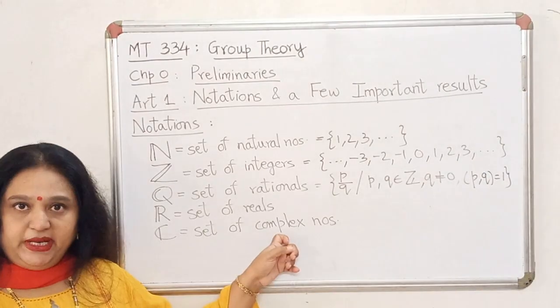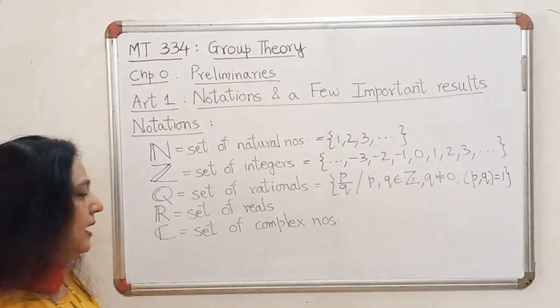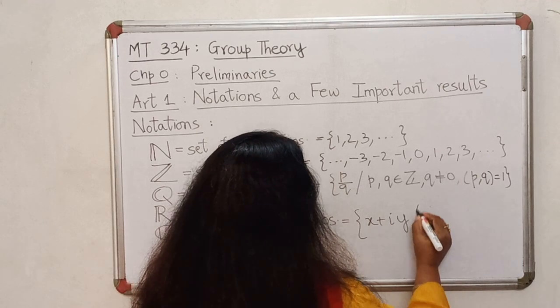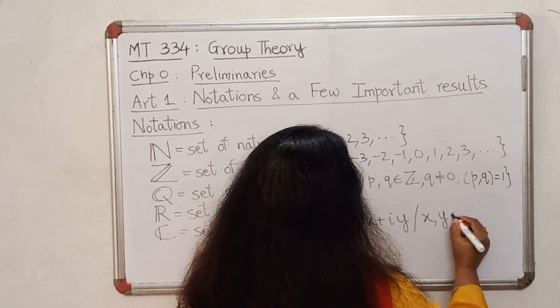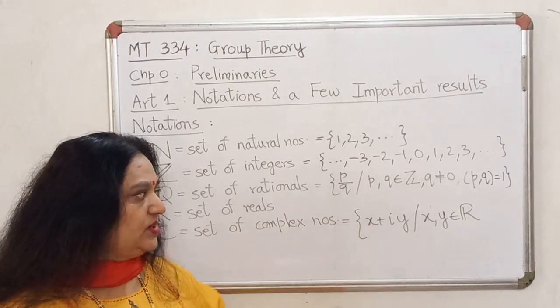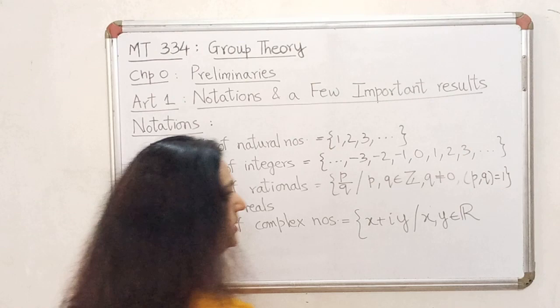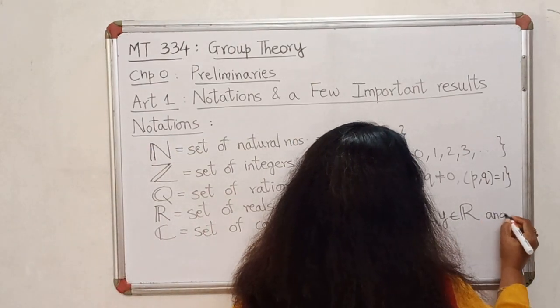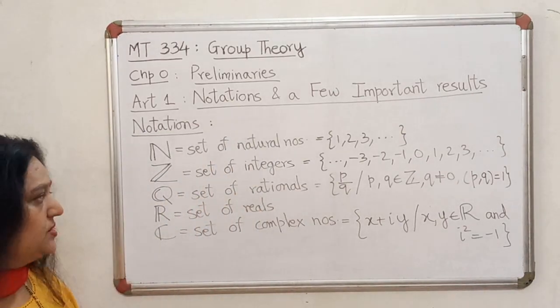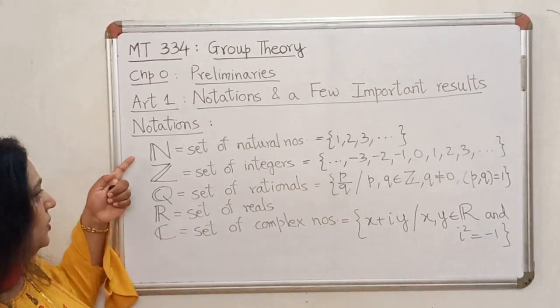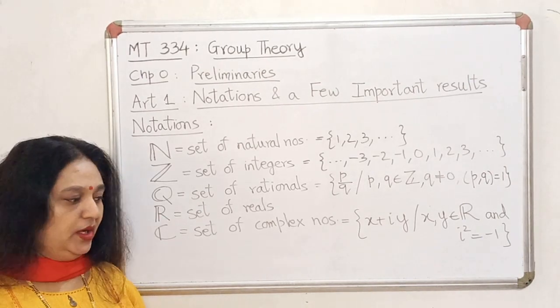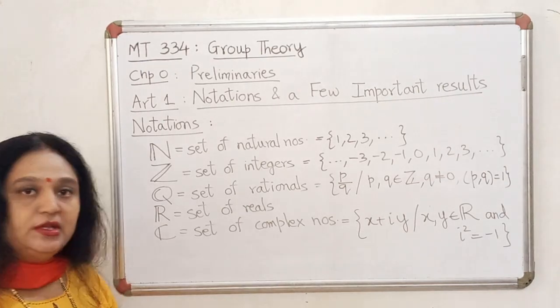And finally we have the set of complex numbers denoted by C. Complex numbers can be written as numbers of the form X plus IY where X and Y are called the real and imaginary parts respectively, but they are both real numbers, and I squared is equal to minus 1. These are sets that we will be coming across very often in group theory, so it's better that you all know the notation for this.